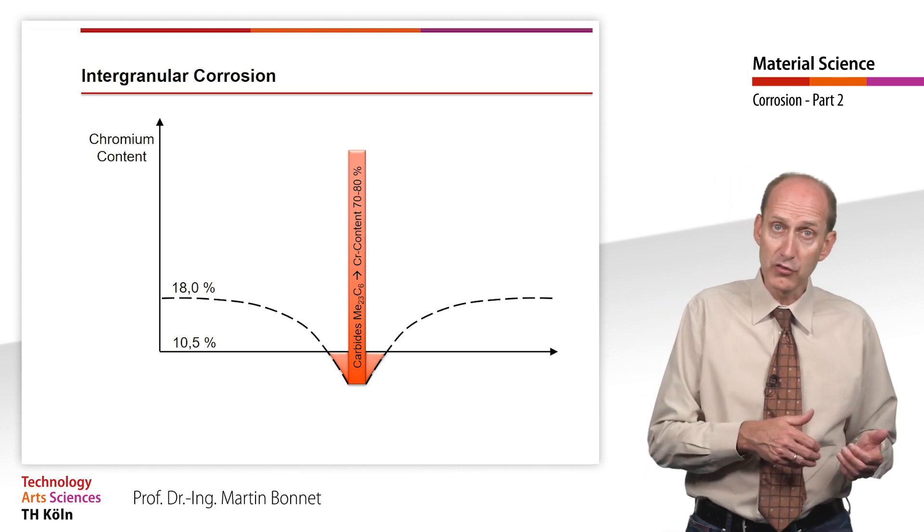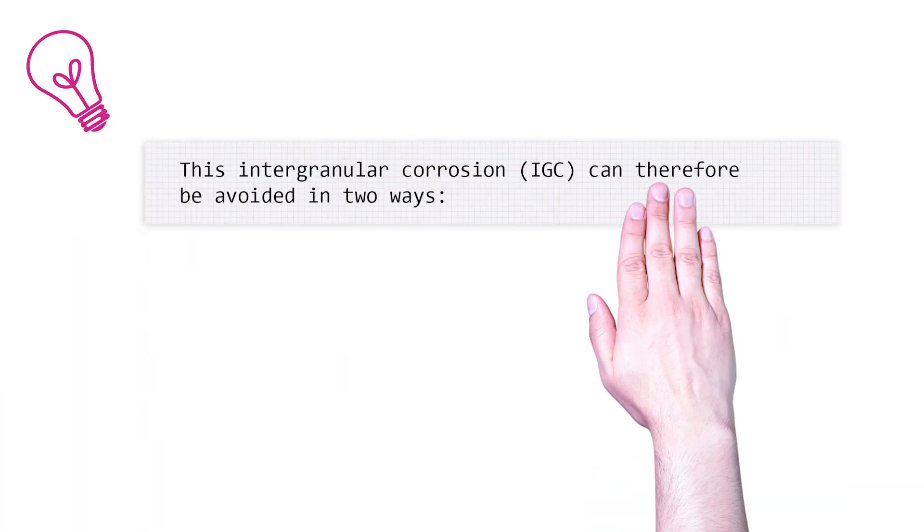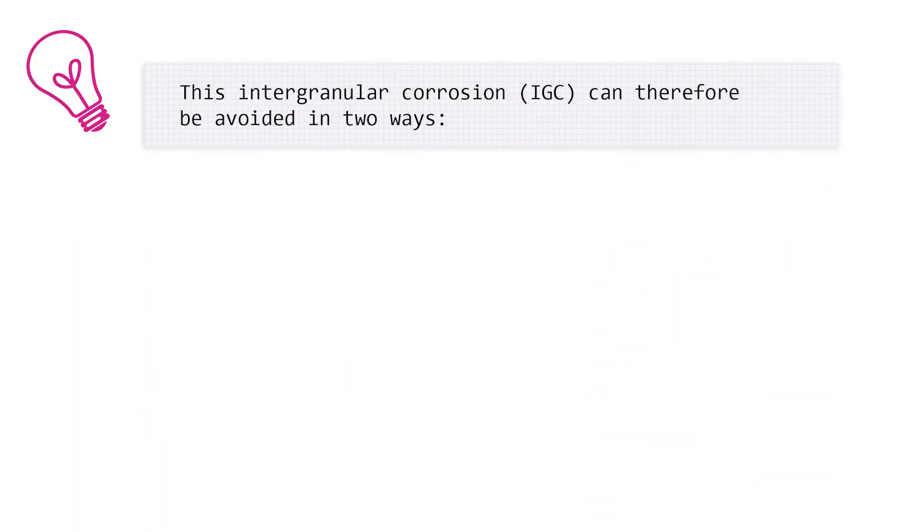Thus, the corrosion resistance is comparable with that of cheap structural steel. This intergranular corrosion, IGC, can therefore be avoided in two ways.